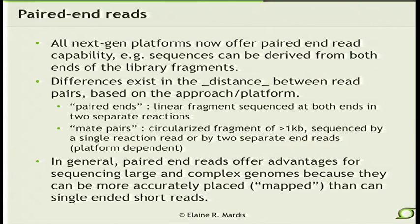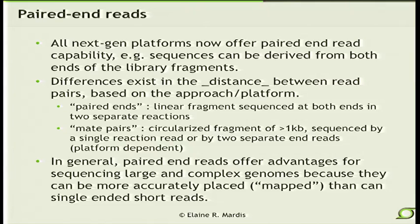The downside of mate pairing as opposed to paired-end reads is that DNA circularization is inherently not very efficient, so large amounts of DNA — typically several micrograms — are required for each library constructed. Whether they're mate pairs or paired-end reads, these offer advantages for sequencing especially when the genome is large and complex like the human genome. You can more accurately place that read on the genome than you can a single-end read — as long as both reads don't fall into a repetitive structure, you can anchor one with certainty even if the other doesn't anchor with high mapping quality. The net result is that you can use more reads towards your ultimate analysis, providing a huge advantage in the economy of sequencing.